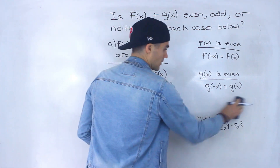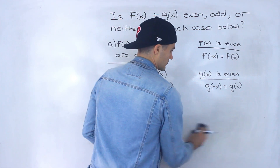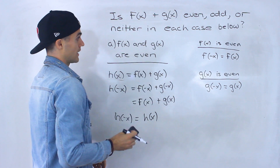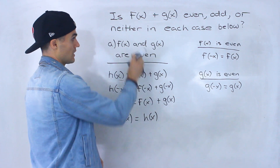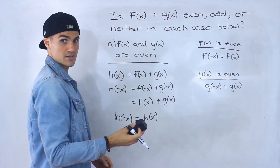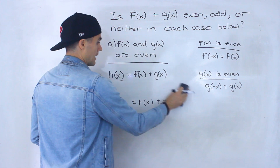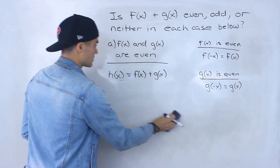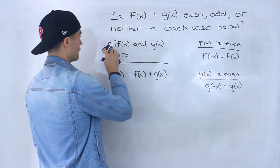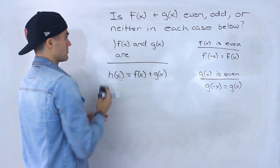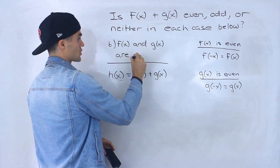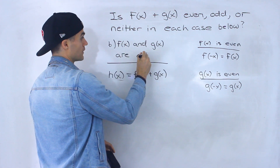So the answer to part A is: f of x plus g of x is going to be even if both f of x and g of x are even. Now for part B, what if f of x and g of x are both odd?